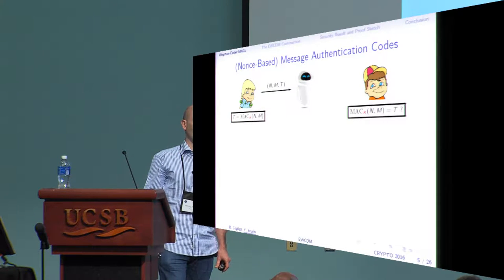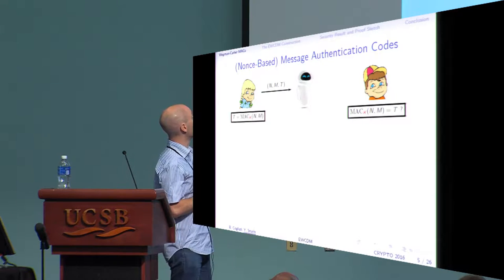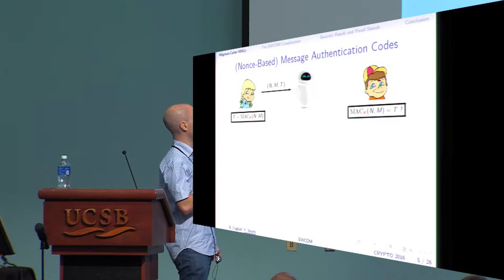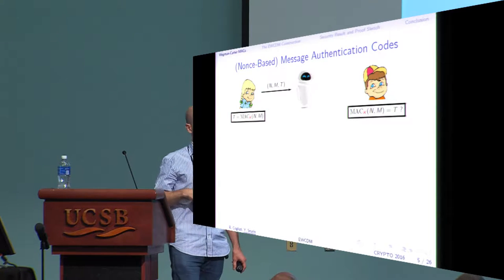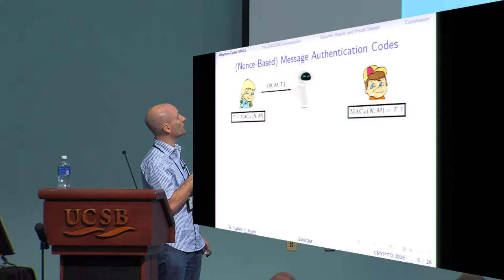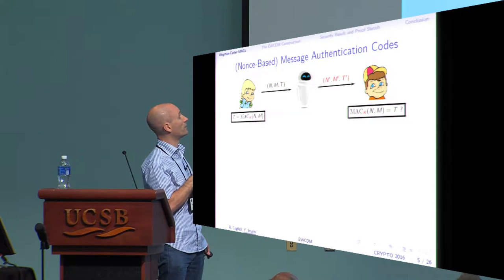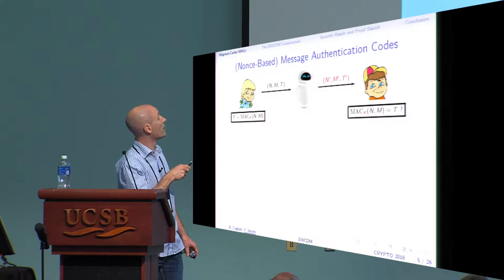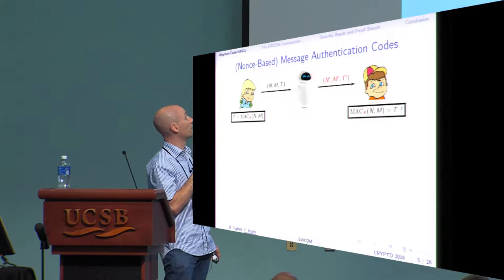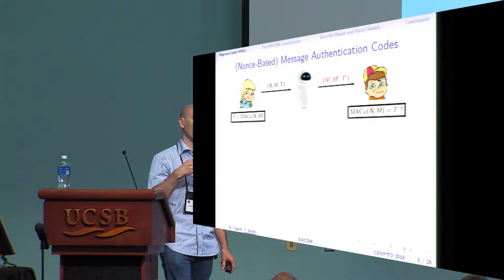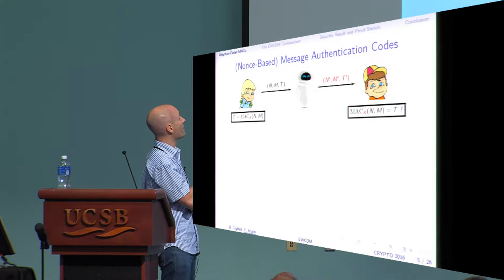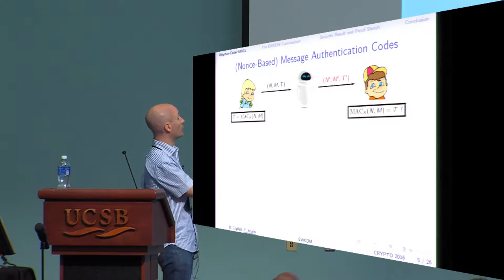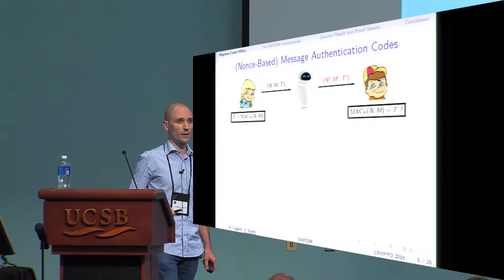What are MACs — message authentication codes? As usual, Alice and Bob want to communicate over an insecure channel potentially controlled by the attacker. They want to send messages and detect when the attacker modifies them. They share a secret key K and compute some function of the message. In this talk, we consider nonce-based MACs, meaning the computation also includes a nonce — a value which should not repeat — and they compute a tag T which is transmitted with the message.